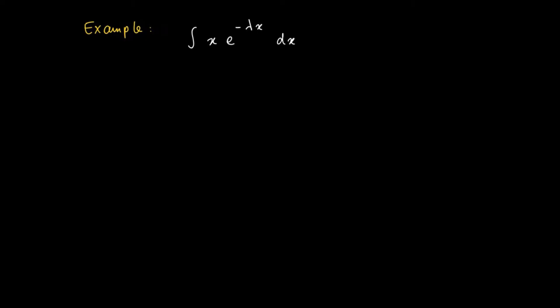So here's a typical example that you'll find in any statistics course, which is integrating a function which is a product of x times the exponential e to the power minus lambda for some constant lambda x.